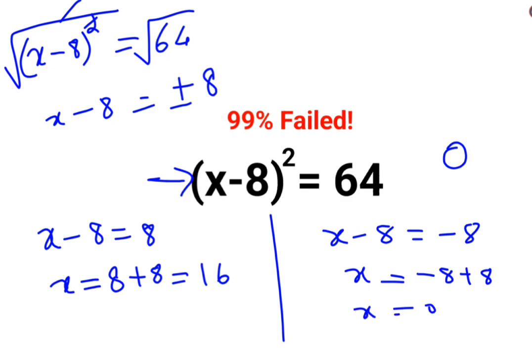Now if you put value of x as 0 you get minus 8 the whole square which gets you 64. Because square of a negative number gets you a positive value.